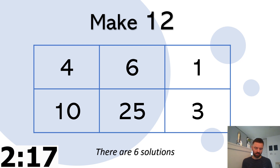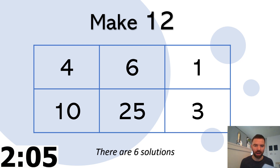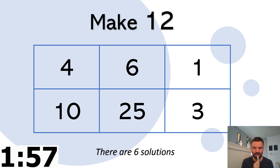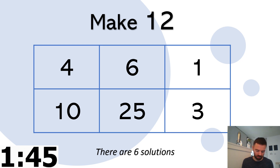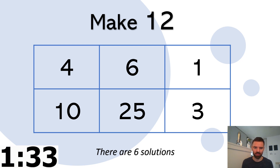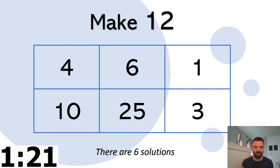Ten add six is sixteen — but then take away four. Two in the bag! There are still four more solutions. This is really difficult. 25 take away 10 is 15, take away... goodness me, that's a long one. I got there — 25 take away 10, take away four, add one. Ten add six is sixteen, add two is eighteen, take away four, take away one — that's only 13. So close!